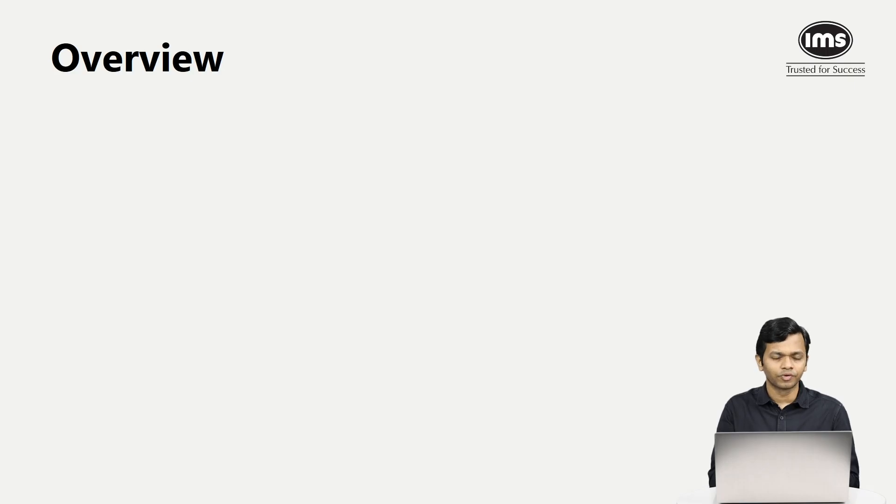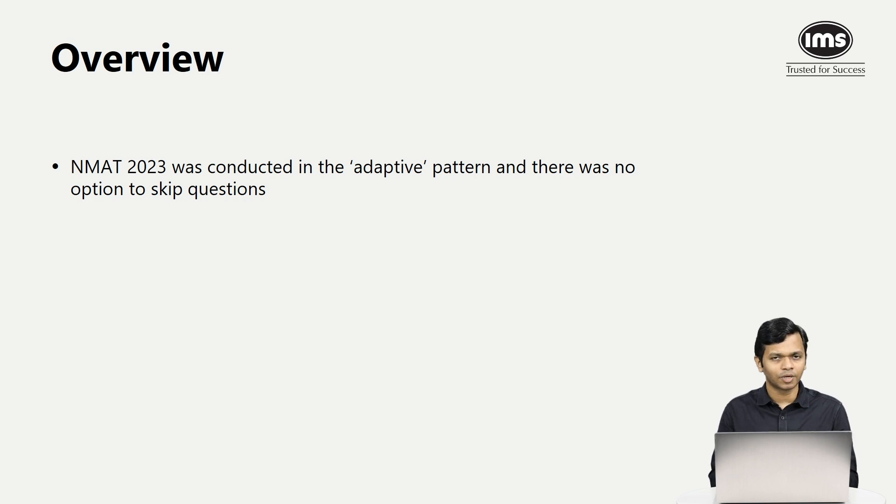Let's start with the overview of the test. When it comes to NMAT, it's an adaptive test. It means that it adapts to the way you are performing on the test and the difficulty level of the questions keeps fluctuating. If you're answering questions correctly, the difficulty level goes up. If you're answering questions incorrectly, the difficulty level goes down, and this keeps happening throughout the test.